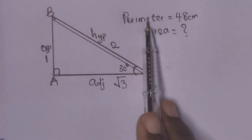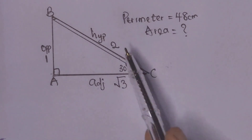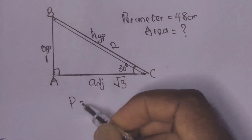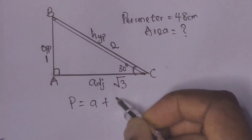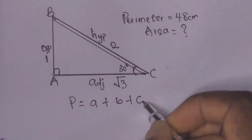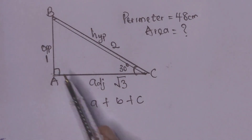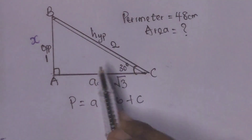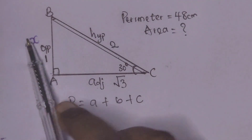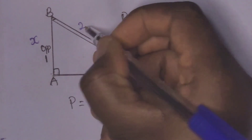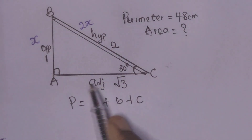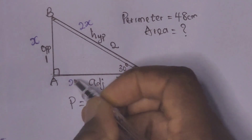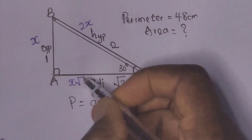Now we are given the perimeter, and we know that the perimeter of the triangle is equal to a plus b plus c. If we name the opposite x, then the hypotenuse will be 2 times the opposite, which is 2x, and our adjacent will be x root 3.